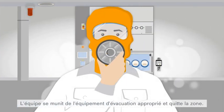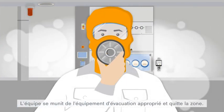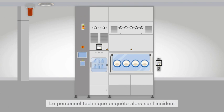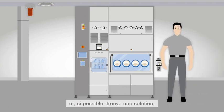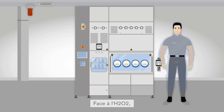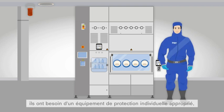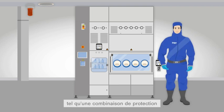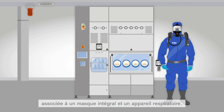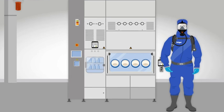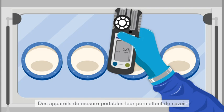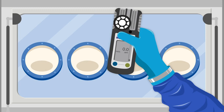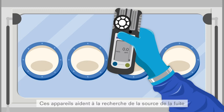Now the measures developed by the safety management take effect. Staff reach for the appropriate evacuation equipment and leave the area. Technical staff then investigate the incident and, if possible, resolve it. To deal with H2O2, they need appropriate personal protective equipment such as a protective suit combined with a full face mask and breathing apparatus. In addition, portable measurement devices help determine if the H2O2 concentration has fallen below the legal limit, aiding in the search for the source of the leak and providing the final clearance measurement.